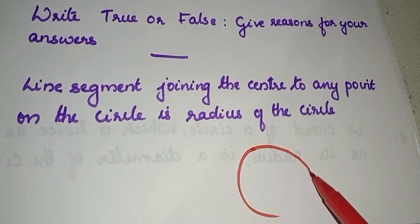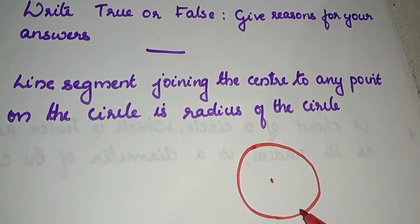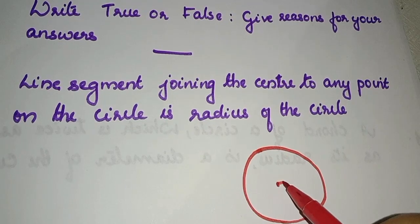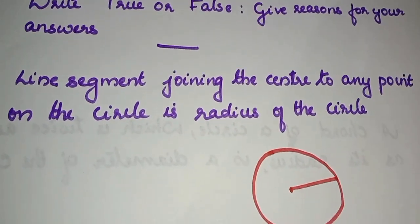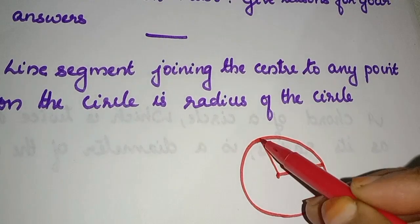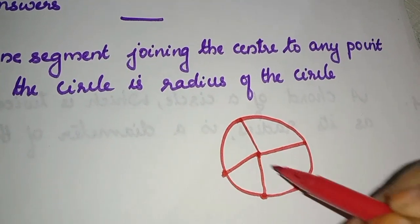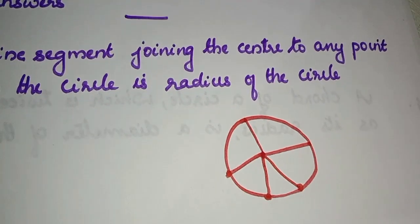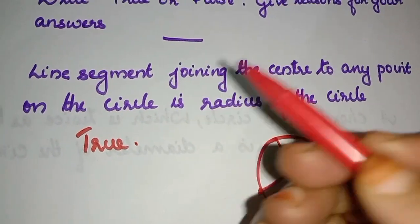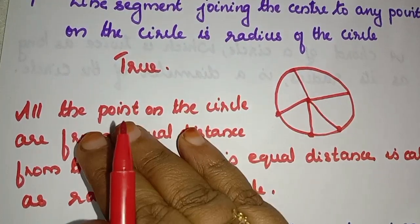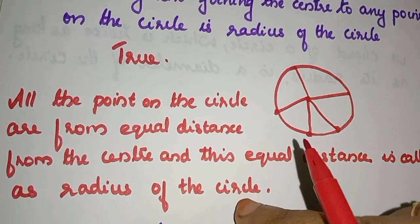Now, this is the circle. We are going to say which point would be on the circle. This line segment — what is the radius of the circle? This equal distance is called the radius of the circle.